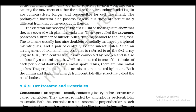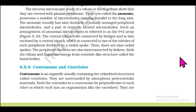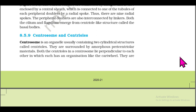The axoneme usually has nine doublets of radially arranged peripheral microtubules and a pair of centrally located microtubules — an arrangement referred to as the '9+2' arrangement. The central tubules are connected by bridges and enclosed by a central sheath, connected to one of the tubules of each peripheral doublet by a radial spoke, giving nine radial spokes. The peripheral doublets are also interconnected by linkers. Both the cilium and flagellum emerge from a centriole-like structure called the basal body.